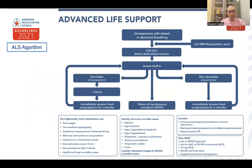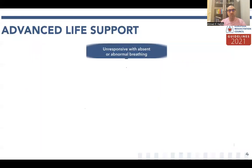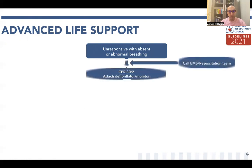This is the European Resuscitation Council Advanced Life Support algorithm. As you can see, there are different arrows in many directions and we will talk about every step, one by one. The patient is unresponsive with absent or abnormal breathing — no response and no breathing. We will start basic life support, call emergency services or the resuscitation team, and begin CPR 30 to 2 — 30 chest compressions to 2 ventilations. At the same time, if available, attach a defibrillator or monitor.